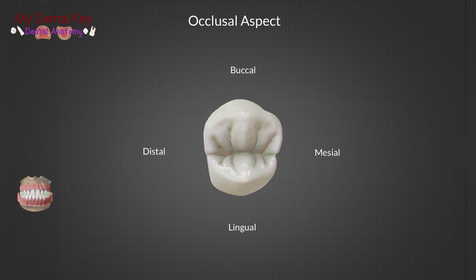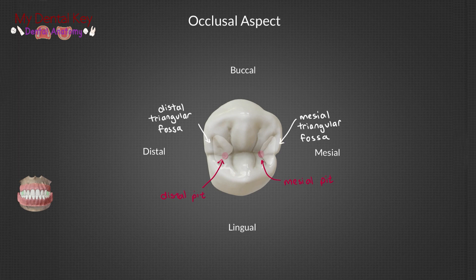The occlusal aspect also has a distal and mesial pit, in addition to a distal and mesial triangular fossa.